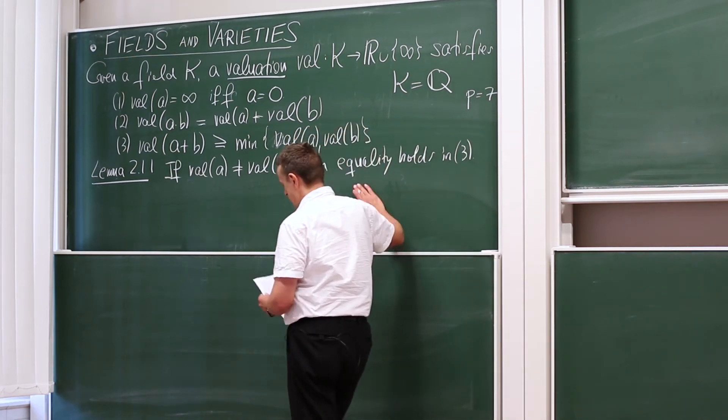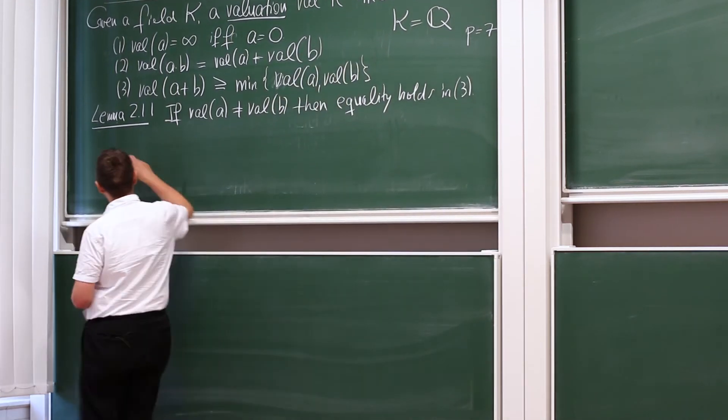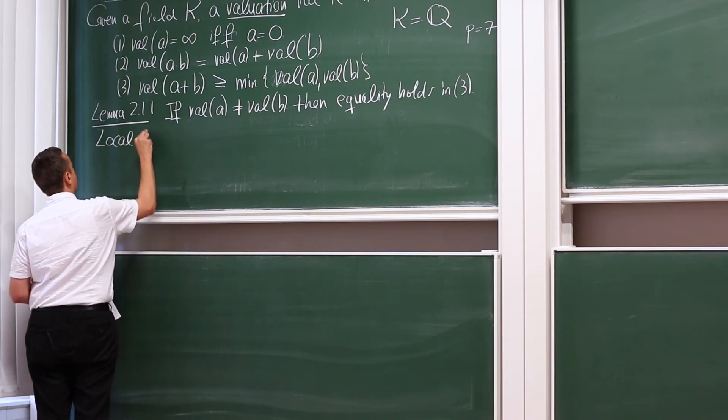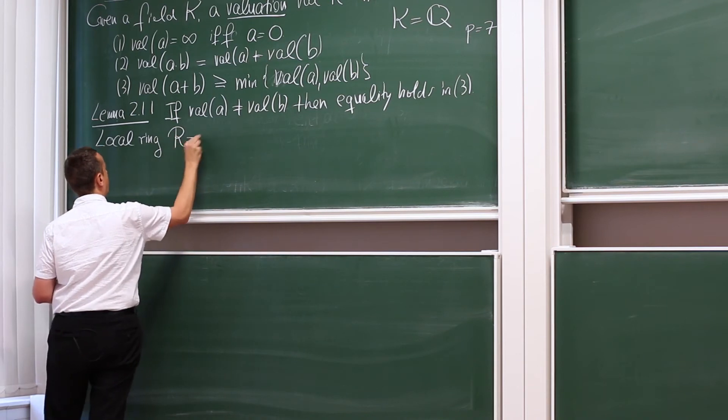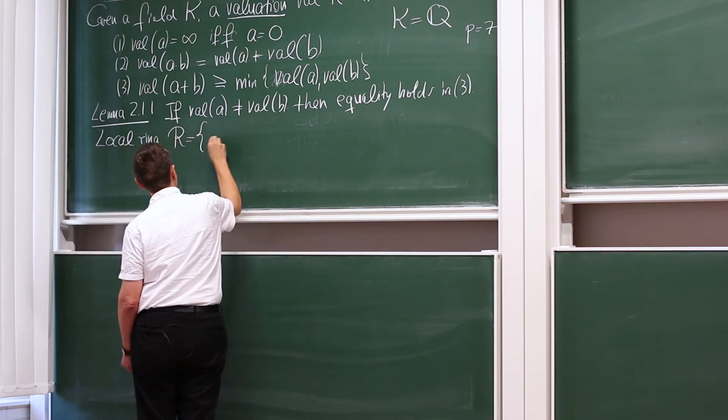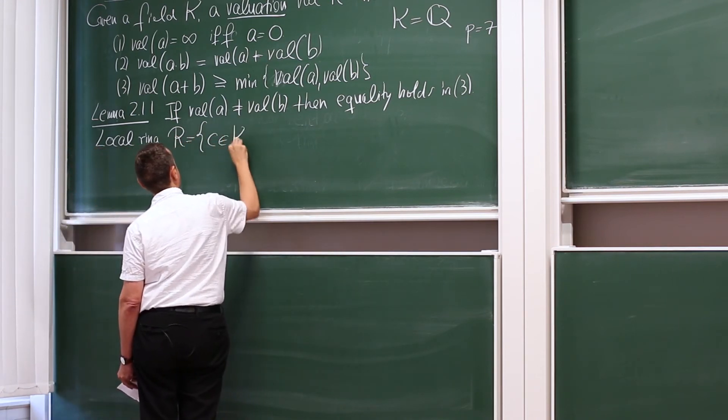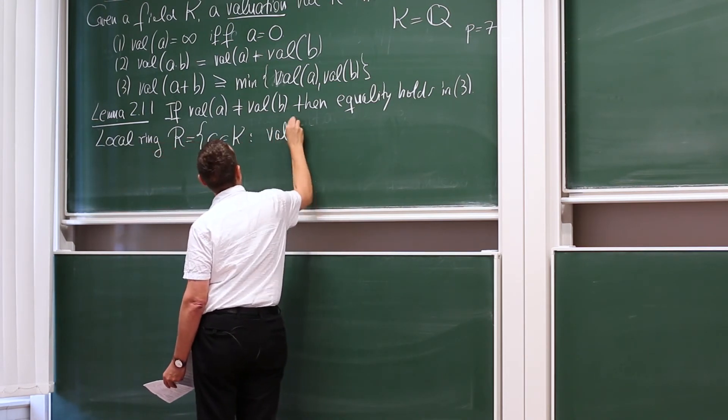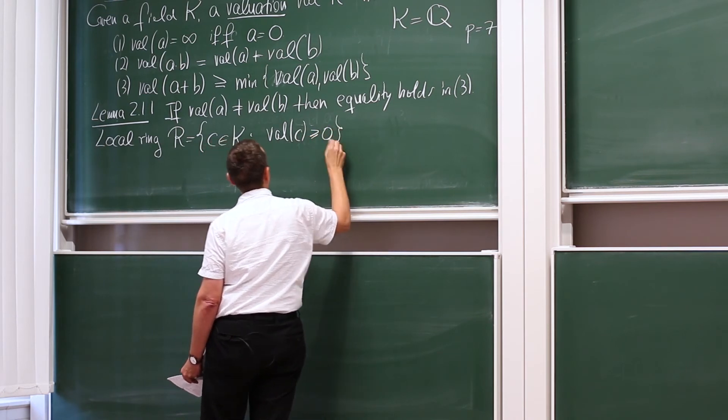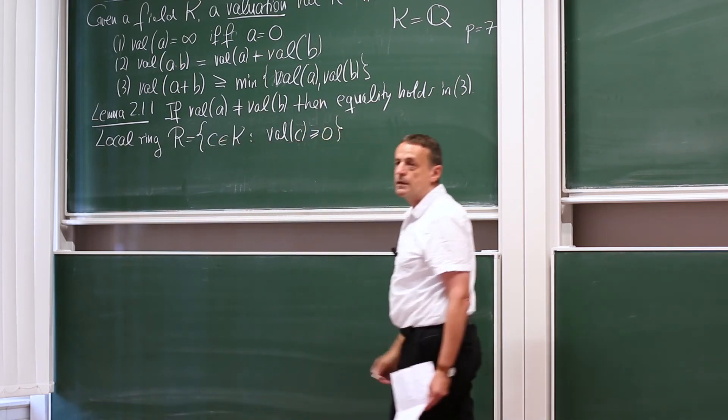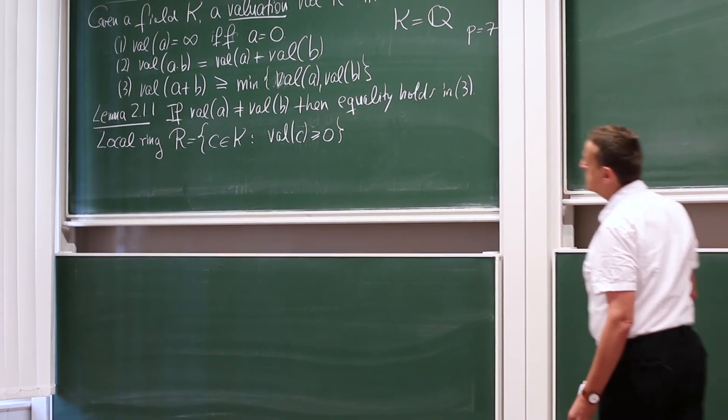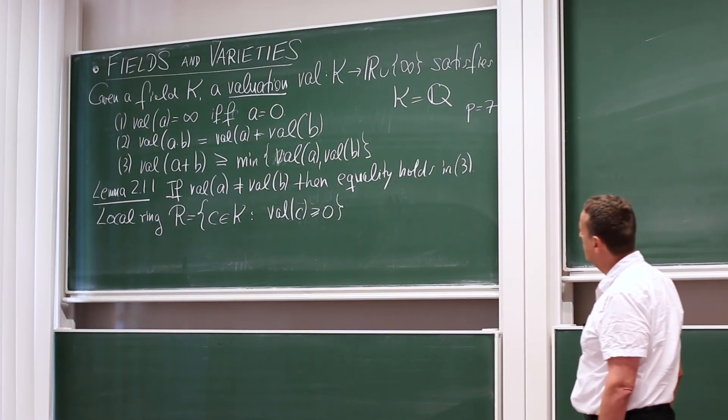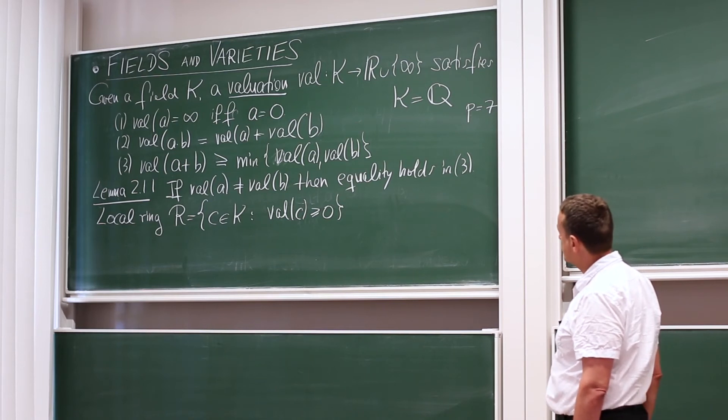Now, if we have a field with such a valuation, there is additional algebraic data. So there is an associated ring. It's a local ring, the valuation ring R. So this is the set of all constants in the field, all field elements C with non-negative valuation. The axioms ensure that the sum and the product of things with the non-negative valuation still have non-negative valuation. So this is the associated local ring.